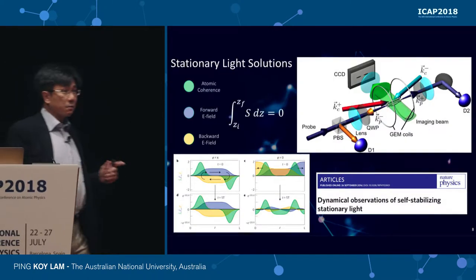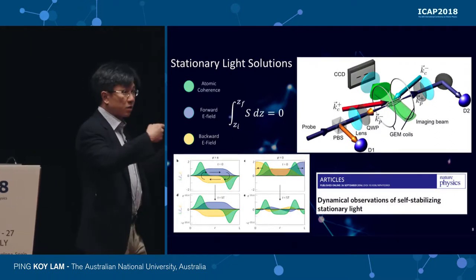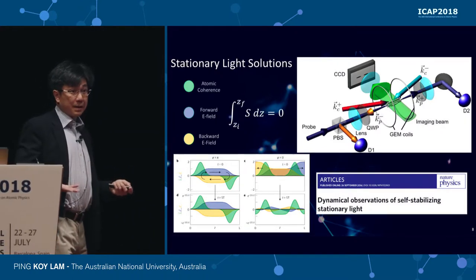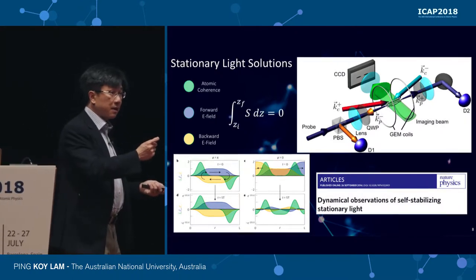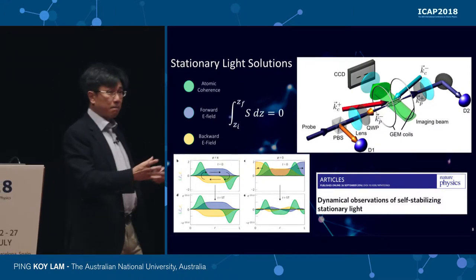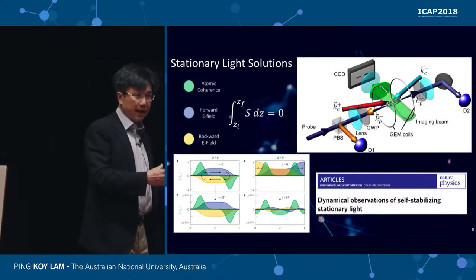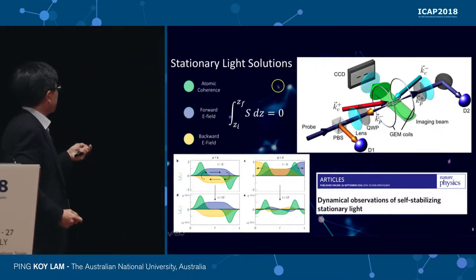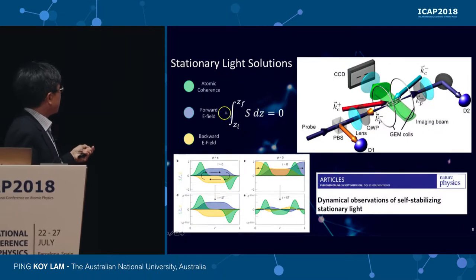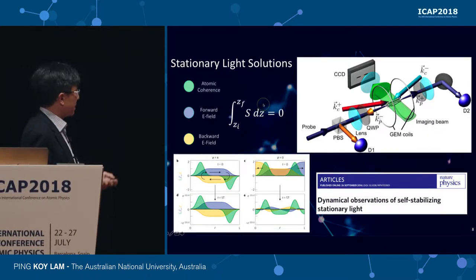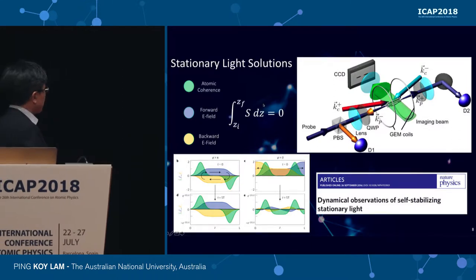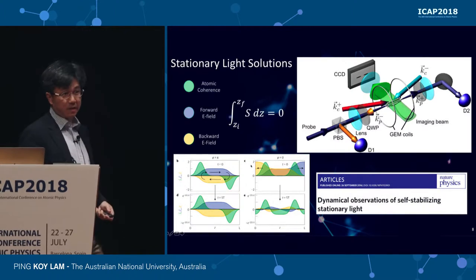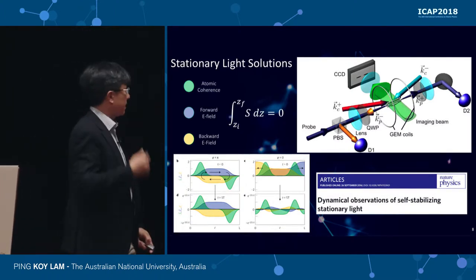If you turn on a counter-propagating control field, you then have two control fields counter-propagating with each other, and you can also set up stationary light — light that's trapped inside the sample. These are not atomic coherences but actual electromagnetic excitations. The condition for setting up stationary light is that you need to integrate the atomic polarization along the length of the MOT and get it to integrate to zero. We call this self-stabilizing stationary light.